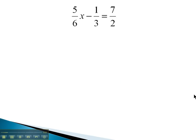In this problem, 5/6 x minus 1/3 equals 7/2, the fractions might make this difficult to solve. So what we will do is get rid of the fractions by multiplying each term by the least common denominator. We have denominators of 6, 3, and 2. The least common denominator of those three values is 6.